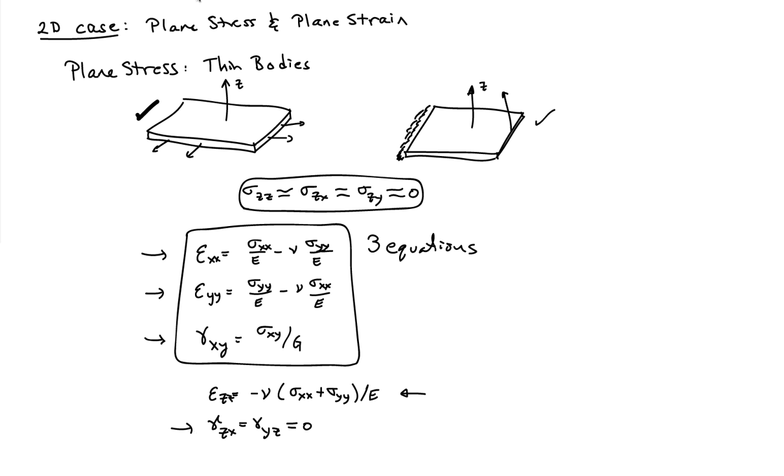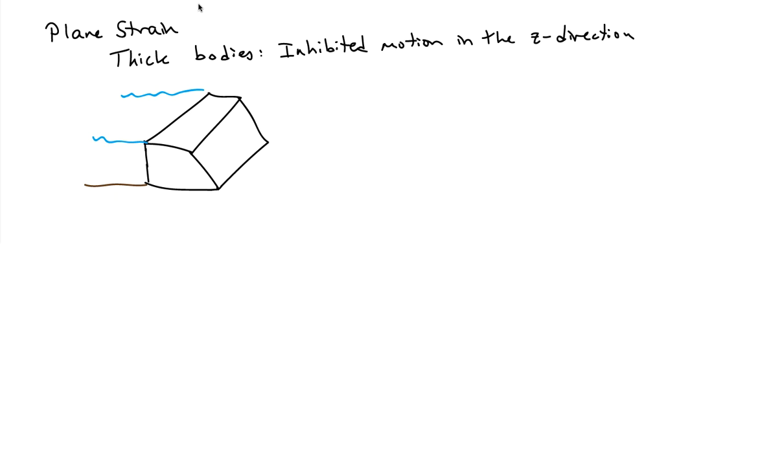The flip assumption that goes with this is something known as the plane strain case. In the plane strain case, you have a thick body in the z direction, so you have inhibited motion in the z direction. A classic example would be a dam that's supporting some kind of water load. In this case, we assume that there is no motion in the z direction, so w equals zero.